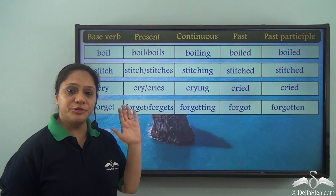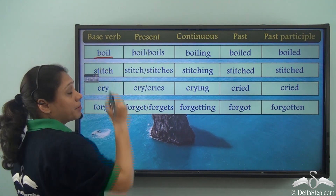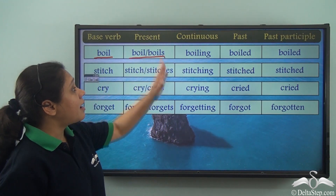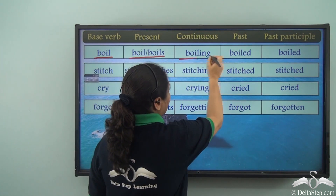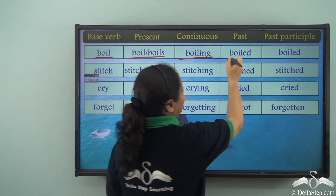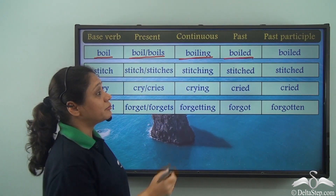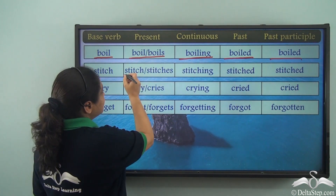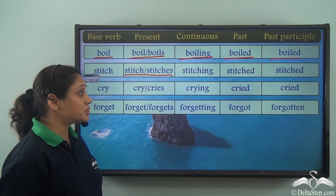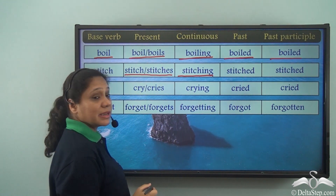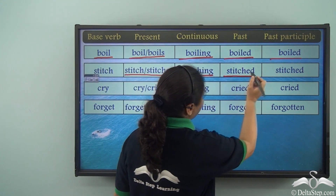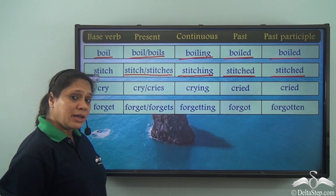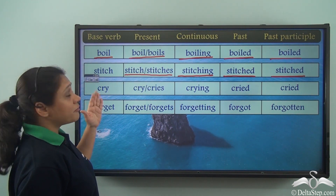Let us look at a few examples. For the base verb 'boil', the present tense form is 'boil' or 'boils', the continuous tense form is 'boiling', the past tense form is 'boiled', and the past participle form is also 'boiled'. For 'stitch', the present tense form is 'stitch' or 'stitches', the continuous tense form is 'stitching', the past tense form is 'stitched', and the past participle form is also 'stitched'.